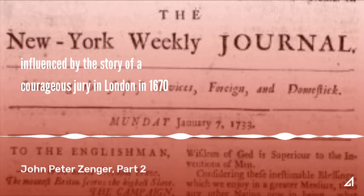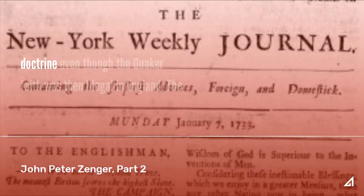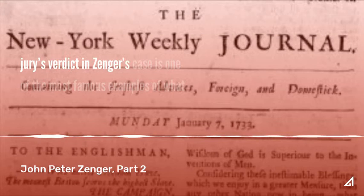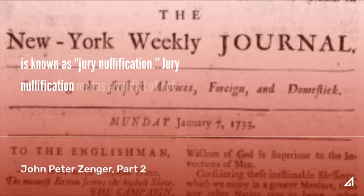The jury apparently was influenced by the story of a courageous jury in London in 1670 that had refused to find William Penn guilty for preaching Quaker religious doctrine, even though the Quaker faith was then illegal in England. The jury's verdict in Zenger's case is one of the most famous examples of what is known as jury nullification.